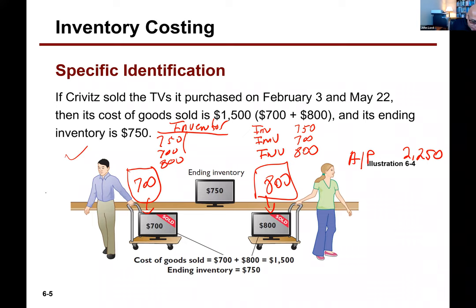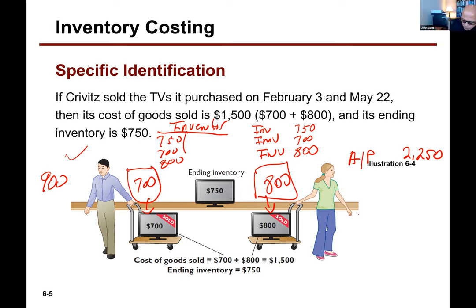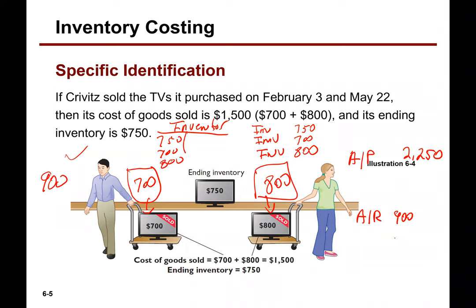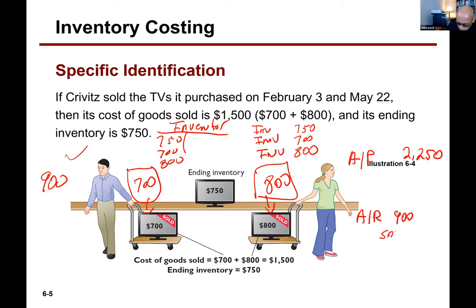They sell it for $900. It costs the entity $700, but they sold it to him for $900. So we debit accounts receivable for $900. We credit sales for $900 — sometimes called sales revenue. Now, to account for the inventory: debit cost of goods sold and credit inventory for $700, which is what the company paid for it.